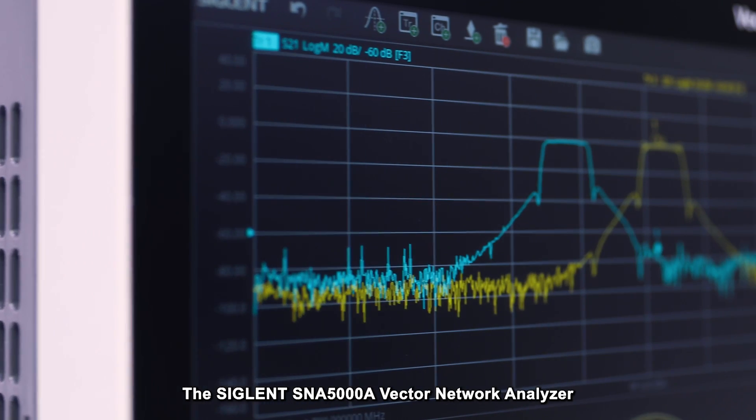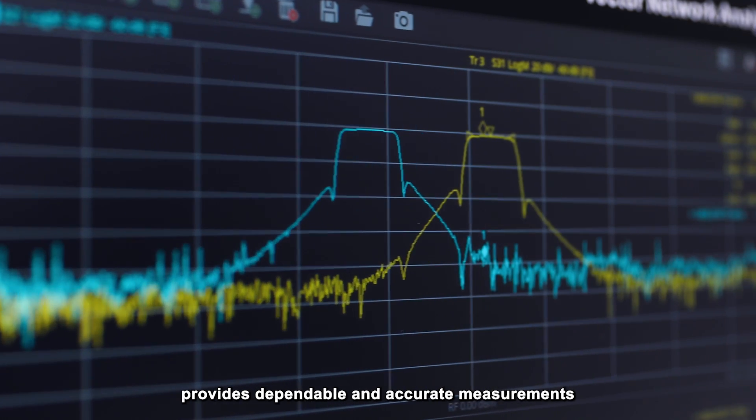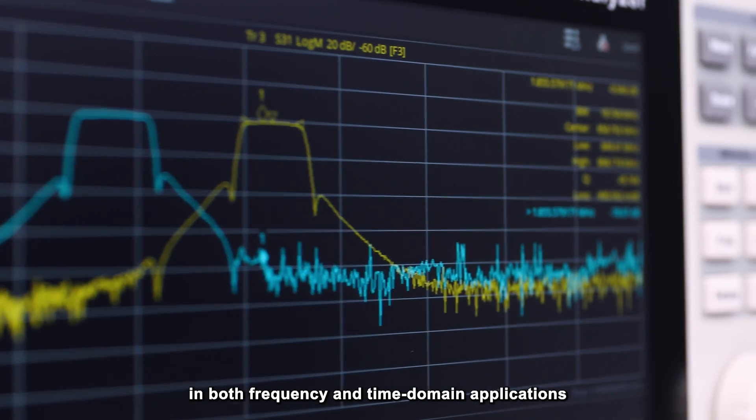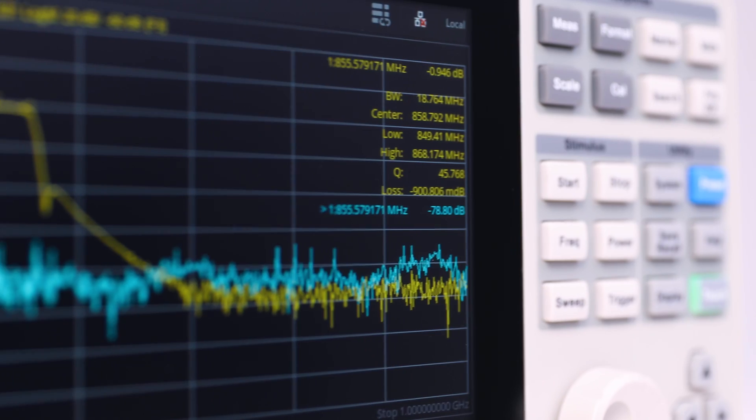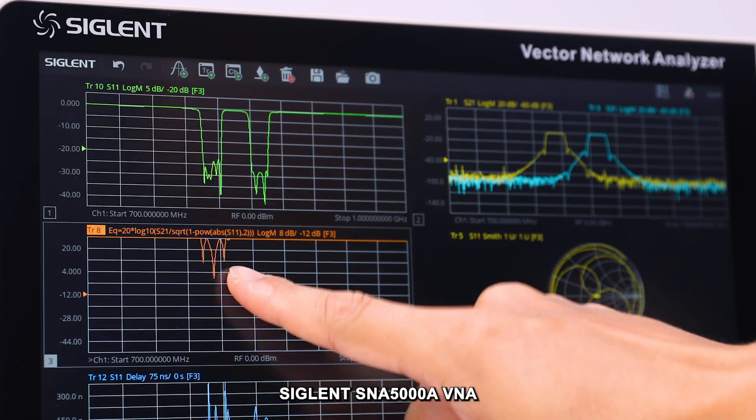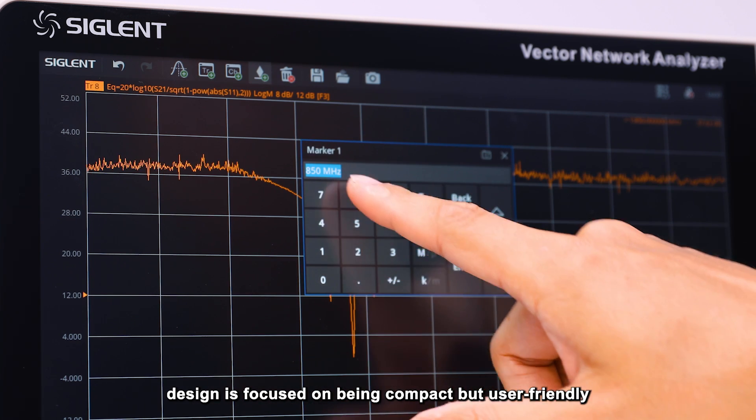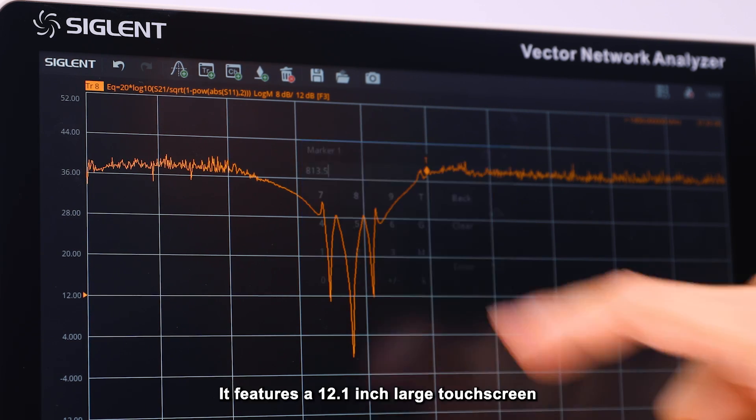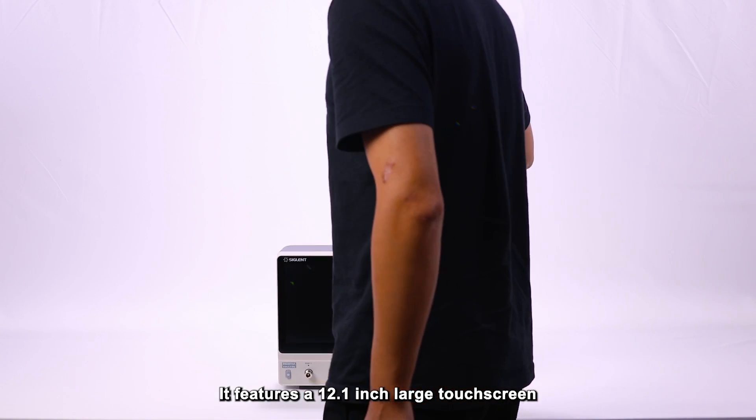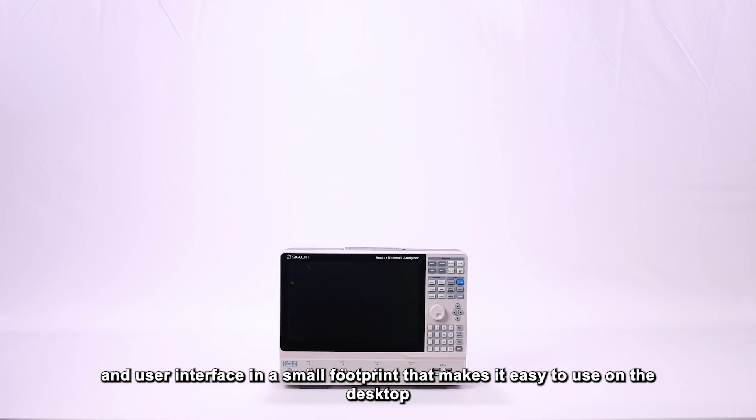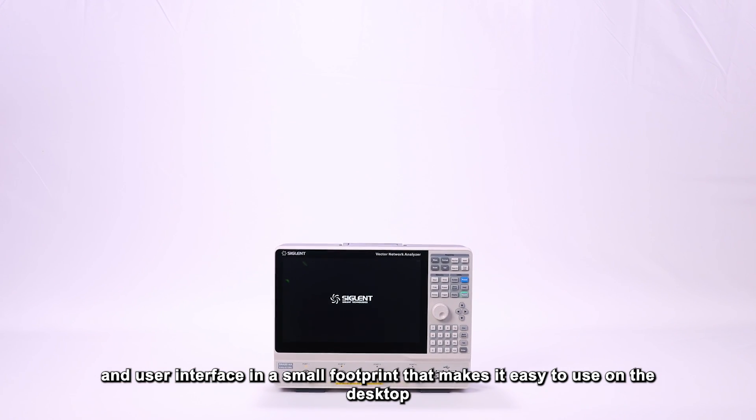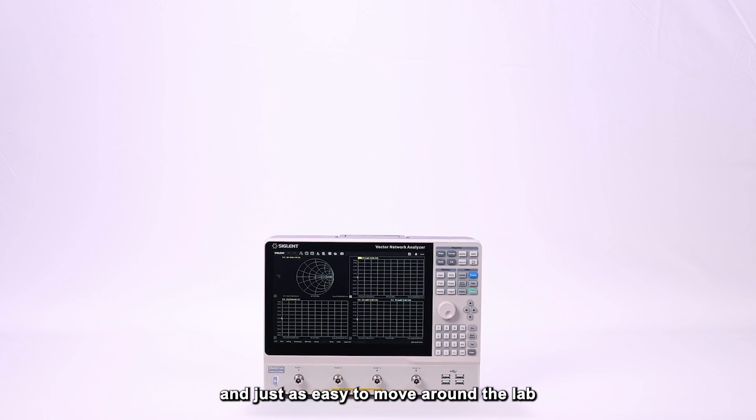The Siglent SNA 5000A Vector Network Analyzer provides dependable and accurate measurements in both frequency and time domain applications. The design is focused on being compact but user friendly. It features a 12.1 inch large touch screen and user interface in a small footprint that makes it easy to use on the desktop and just as easy to move around the lab.